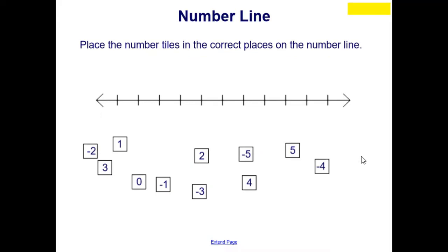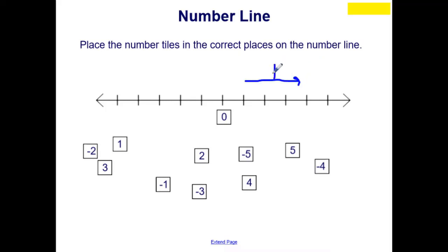When we look at the number line, we have to first mark the numerals and the numbers, so we're going to place the number tiles in the correct places on the number line. It's always best to start off with 0, since 0 is often our reference point, and 0 will always go directly in the center of our number line. We're then going to work with the positive numbers and place them to the right, since positive numbers are to the right of 0. All positive numbers are to the right, and all negative numbers would be to the left.